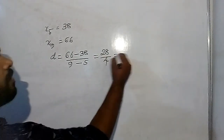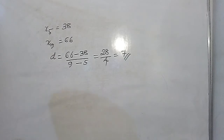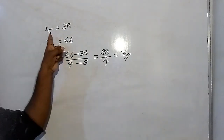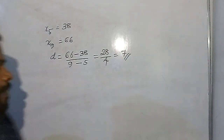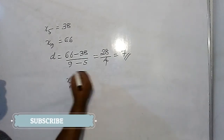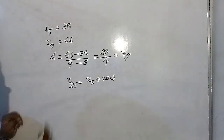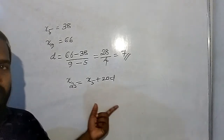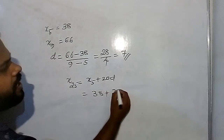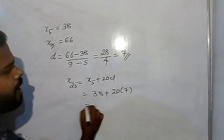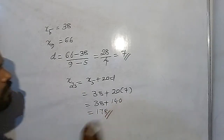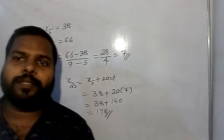The 25th term: a25 equals 38 plus 20 into d, which is 7. So 38 plus 140 equals 178.